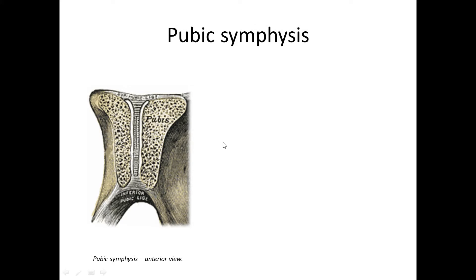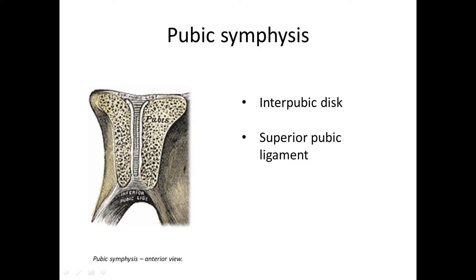Let's start with the pubic symphysis. We see the figure with the anterior view of a frontal cross-section. Between the symphysial surfaces of the pubic bones there is an interpubic disc. Due to the cartilage structure of the disc, this type of connection can be called a synchondrosis. In this case there are two stabilizing ligaments.